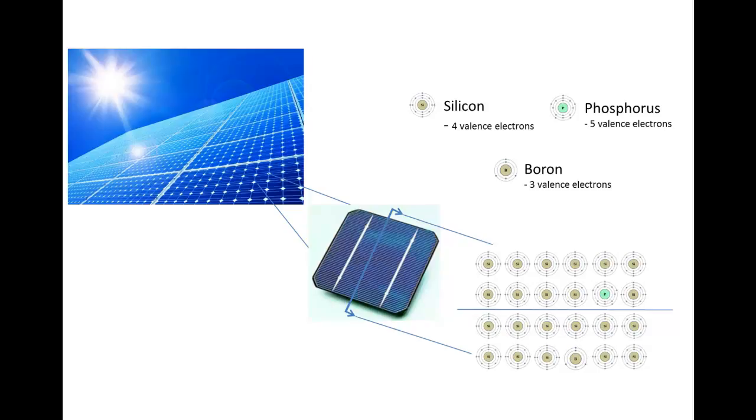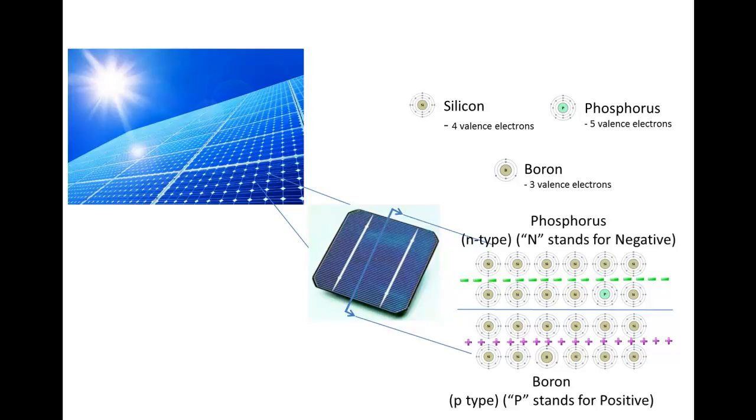When I have added those impurities, I've created an area with some extra electrons in the phosphorus and an area with some extra holes or gaps in that valence band. And so generally I have some negative area on the top and a positive on the bottom.